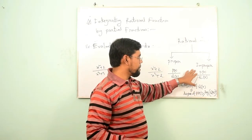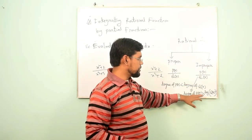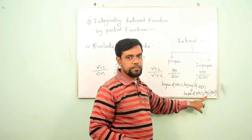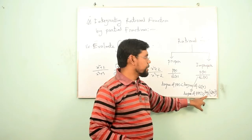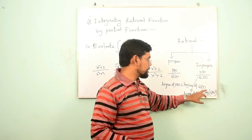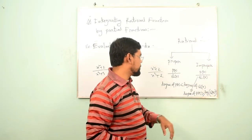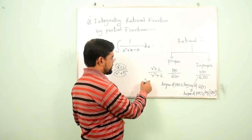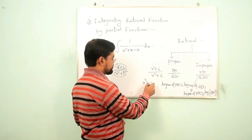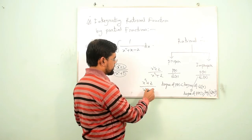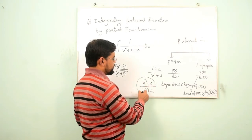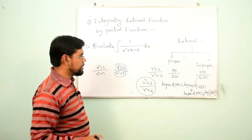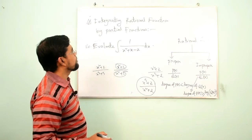If the degree of the numerator is greater than or equal to the degree of its denominator, then it is called improper. For example, (x³ + 2) divided by (x² + 2) — this one is an improper rational function.